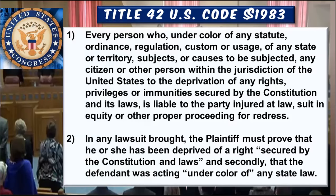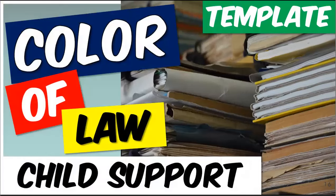Title 42 U.S. Code 1983 is the statute used against government officials, judges, and clerks to sue them for deprivation of your rights. The first part reads: every person who, under the color of any statute, ordinance, or regulation, subjects citizens of the United States to deprivation of their rights. The second piece is: in any lawsuit brought by a plaintiff, they must prove deprivation of a right secured by the Constitution and laws. The defendants must be acting under the color of state law. We also have a template called The Color of Law.